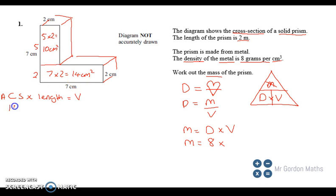Add those areas together and you're going to get—so the cross sectional area is 14 plus 10, which is 24.